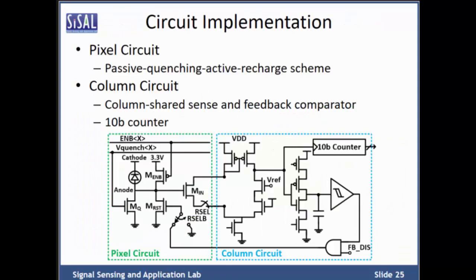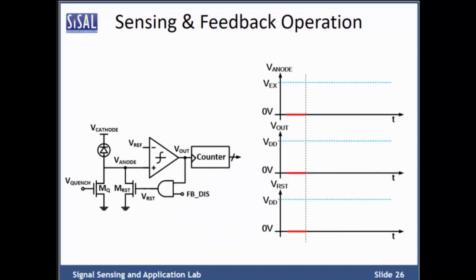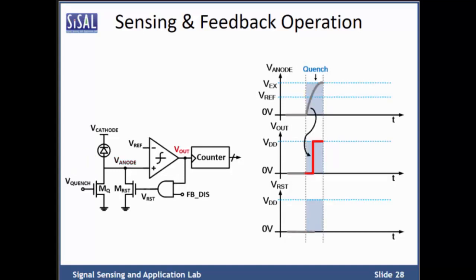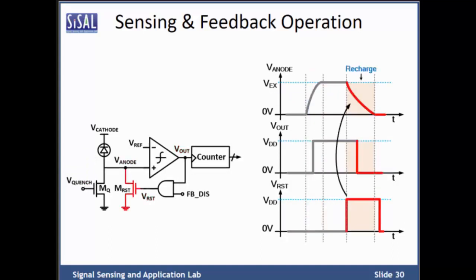Now let's go to the circuit implementation of block 3, the pixel cell. The pixel cell circuit is designed with passive quenching and active recharge scheme, meaning transistor MQ works as a quenching resistor, and MRST provides the active recharge path for the diode. The readout circuit includes a current sharing sense and feedback comparator and a 10-bit counter. In the avalanche trigger event, voltage at the anode will rise to the predefined excess bias level. Then, the comparator output will change state from low to high and feed back the signal to turn on MRST for recharging the diode.